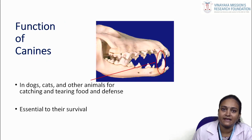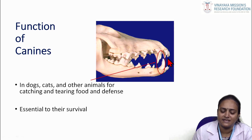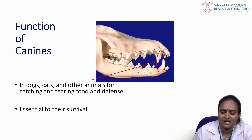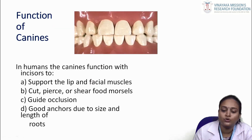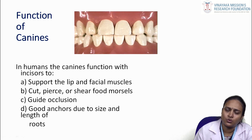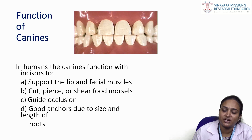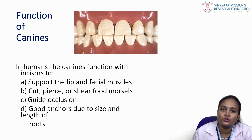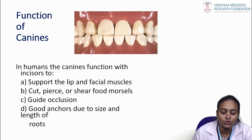Functions of the canine: mainly the canine is present at the corner of the tooth. Its main functions are aesthetic purpose and catching or tearing of food. In animals, it helps in catching and tearing food, defense mechanism, and survival. In humans, the canine functions to support the lip and facial muscles, assist in cutting, piercing, and shearing food particles, and guide the occlusion. It gives proper occlusion to the oral cavity and has good adherence due to the size and length of its roots.